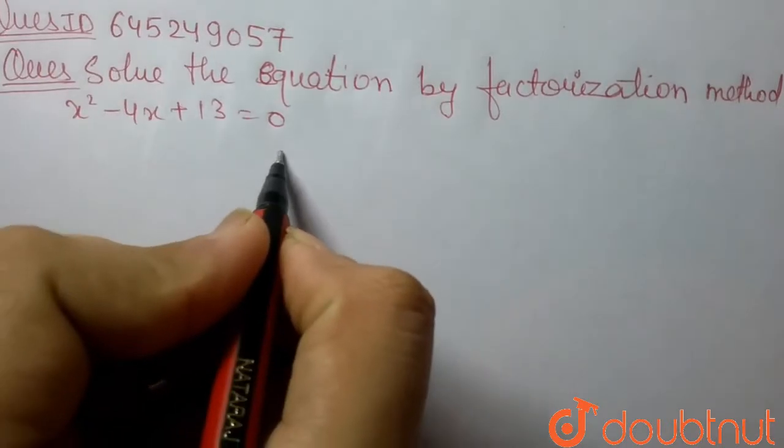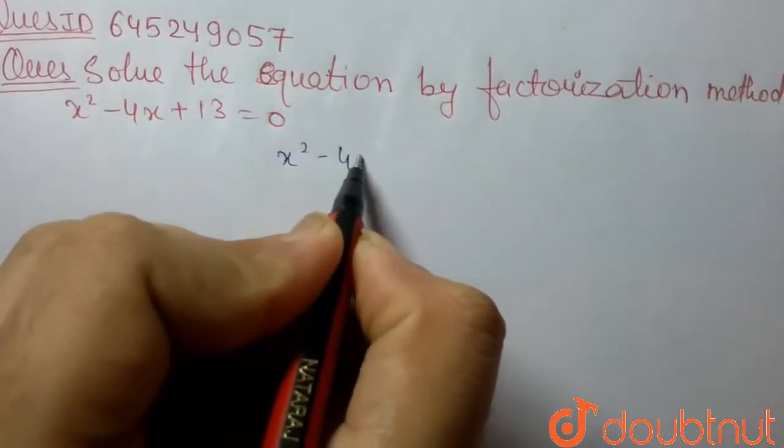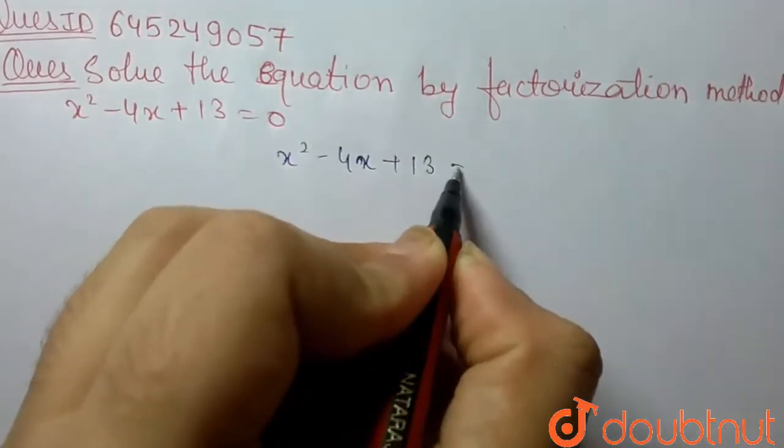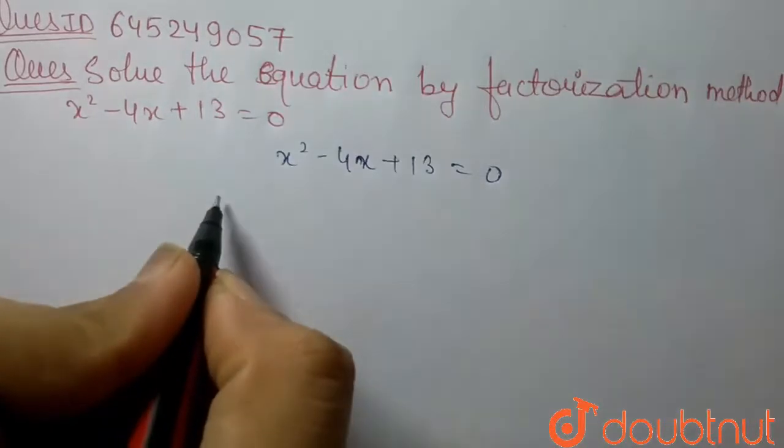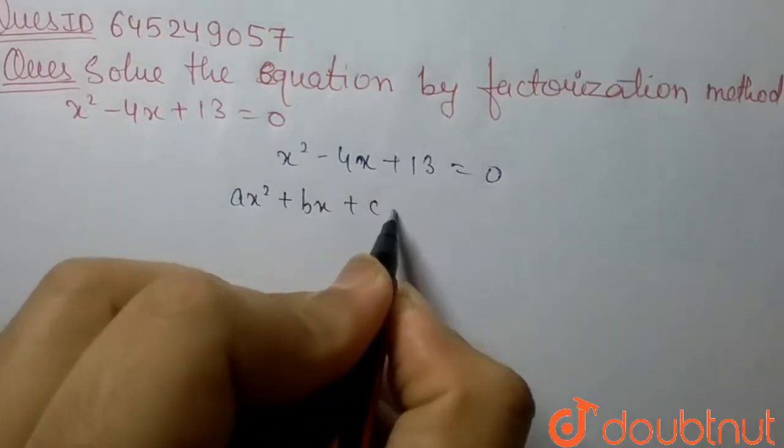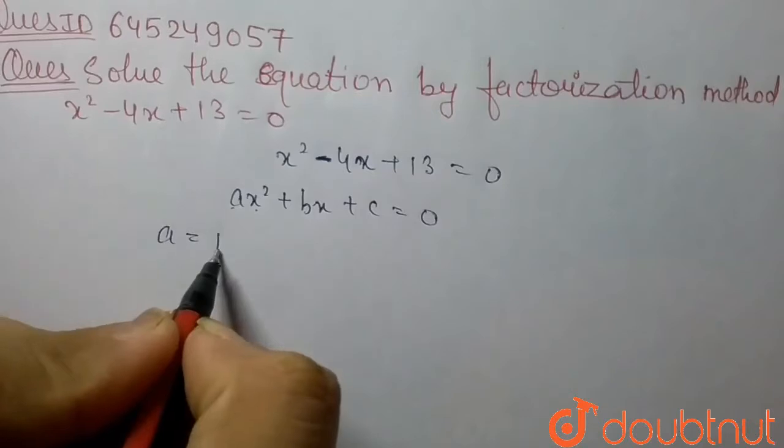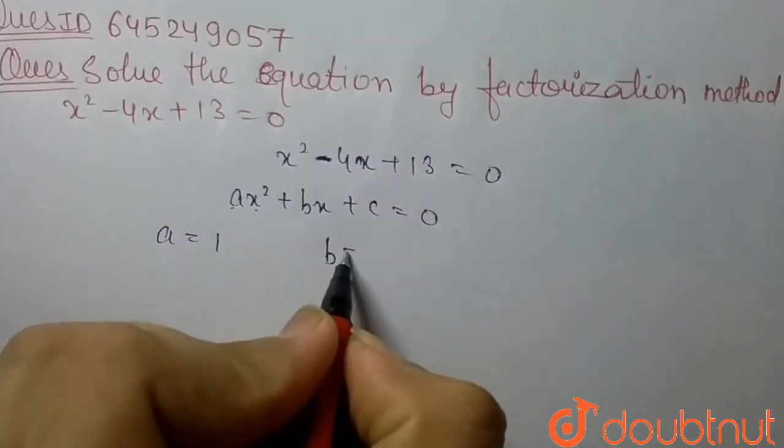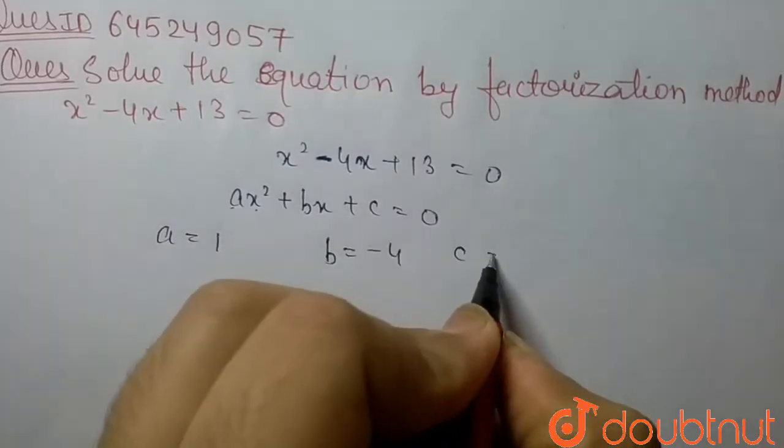So we can first write the equation x squared minus 4x plus 13 is equals to 0. And if we can compare the equation with ax squared plus bx plus c is equals to 0, we get the value of a is 1, b is minus 4 and c is 13.